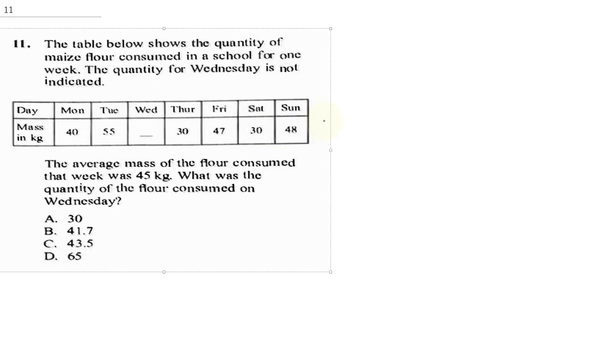To get the flour, since the average is 45, this is going to be 45 equals 40 plus 55 plus, let's call Wednesday x, plus 30 plus 47 plus 30 again, plus 48.